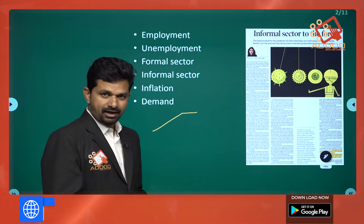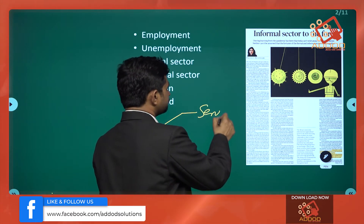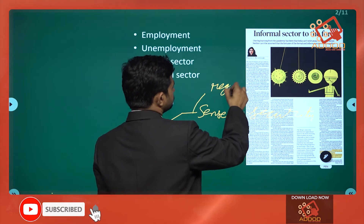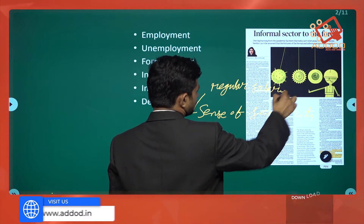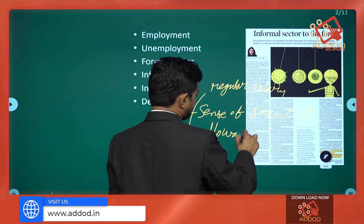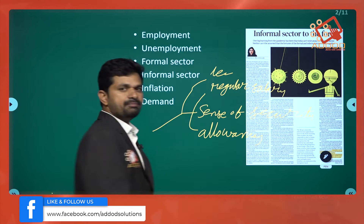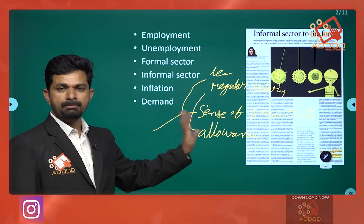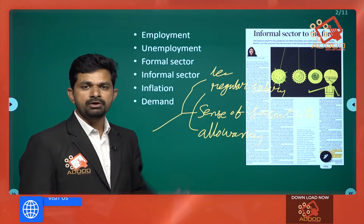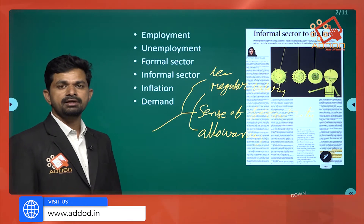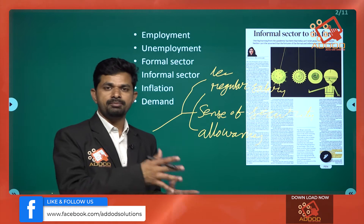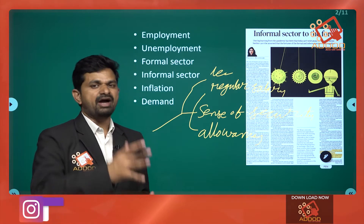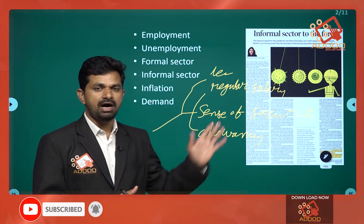What is formal employment? Formal employment is where you are working in an organization and you have job security, regular salaries, allowances, leaves, PF, gratuity — every benefit is available. There is a guarantee of employment; if you are to be terminated, you will be given a notice of at least three months. Examples include government employment, software engineers, and white-collar or blue-collar factory workers — all safety and security nets are present.